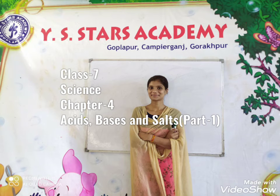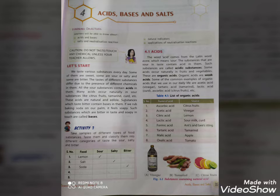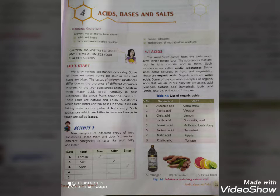Hello my dear students, today we will discuss Class 7th Science Chapter 4. The name of the chapter is Acids, Bases and Salt. Let me start. Now we are going to start with acids, bases and salt.